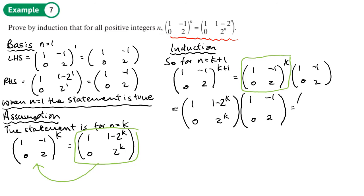Multiplying out: the top-left gives 1 times 1 plus 0, which is 1. Top-right gives negative 1 plus 2 times (1 minus 2 to the k). Bottom-left gives 0 plus 0, and bottom-right gives 2 times 2k. We want to get this into the form with k plus 1, which will prove the statement by induction.